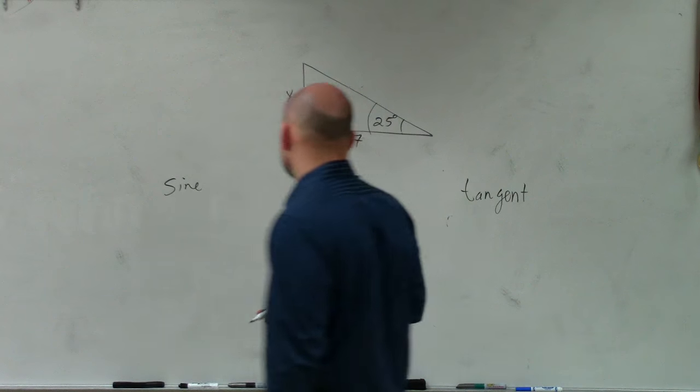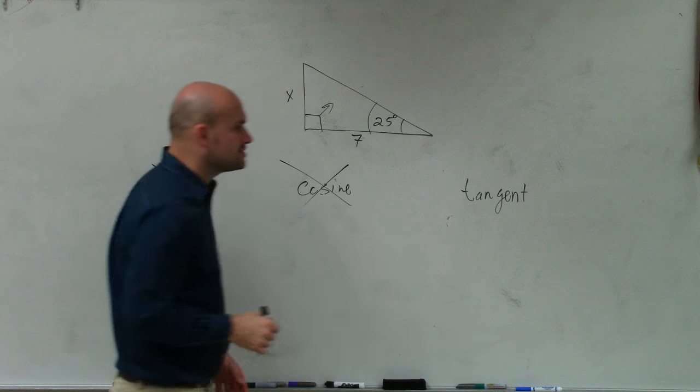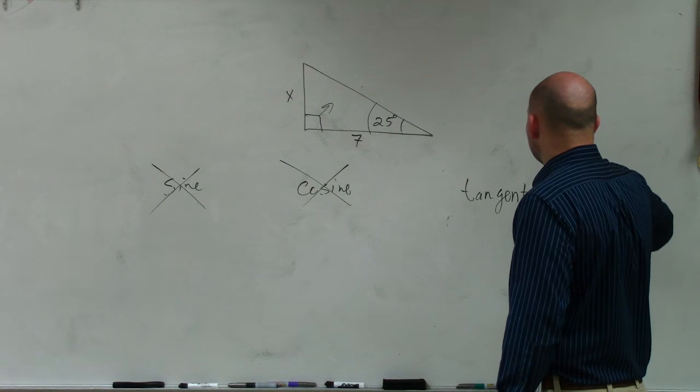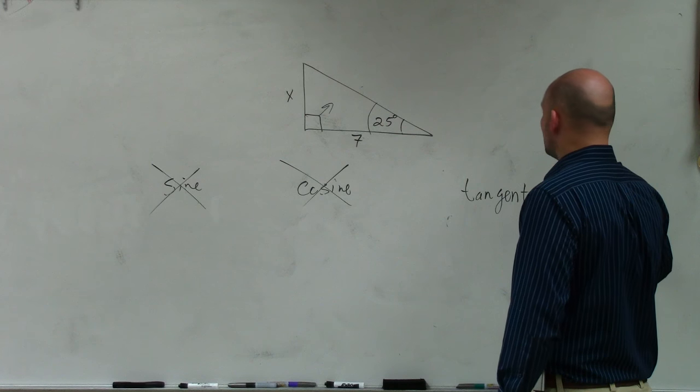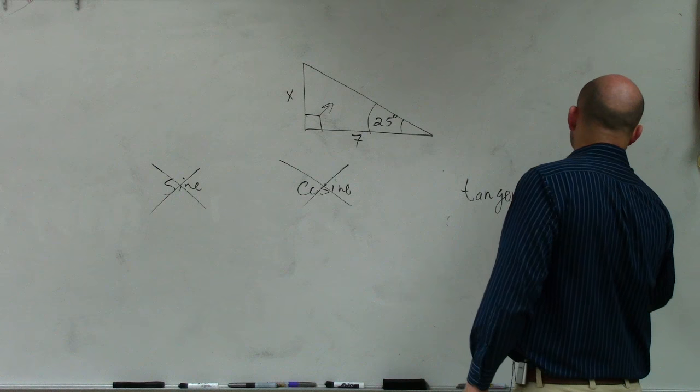Tangent function. So we're not going to do sine, we're not going to do cosine. We're just going to do tangent because tangent of any angle is equal to the ratio of opposite over adjacent.